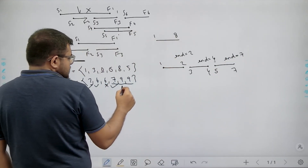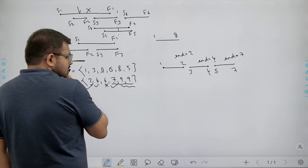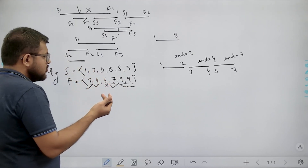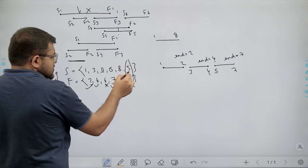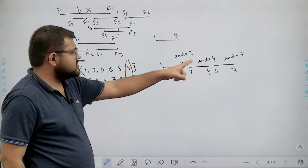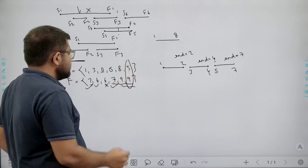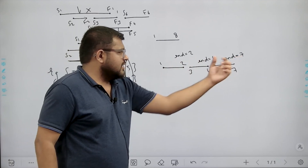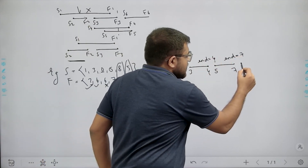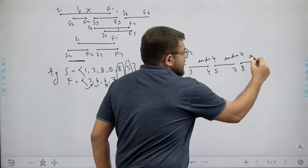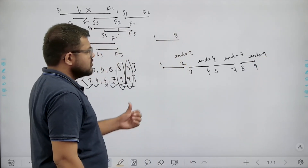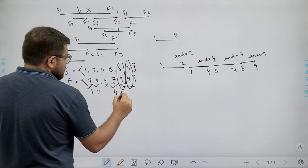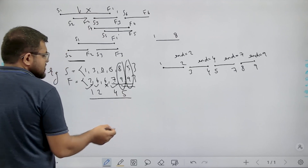From the two remaining meetings, sorting by end time puts the one with start time five first — but five is less than seven, so we cannot conduct it. The next meeting has start time eight, which is greater than seven, so it can be conducted — from eight to nine. The end time becomes nine and there are no more meetings. So in total, four meetings can be conducted: the first, second, fourth, and fifth meetings. We return these in our answer.